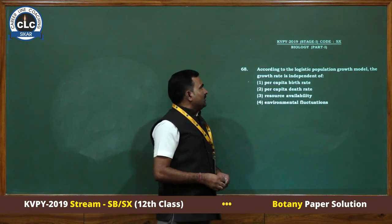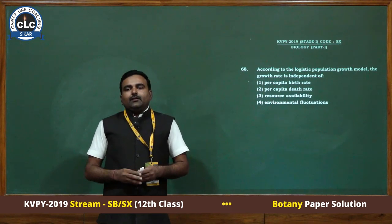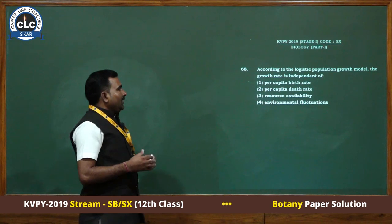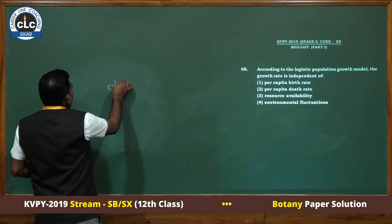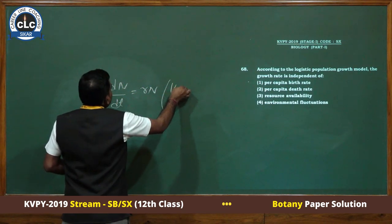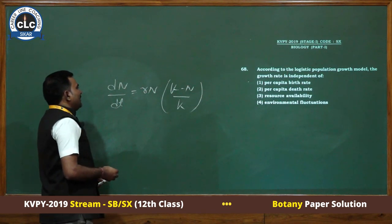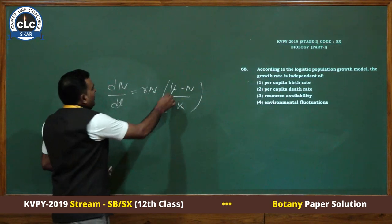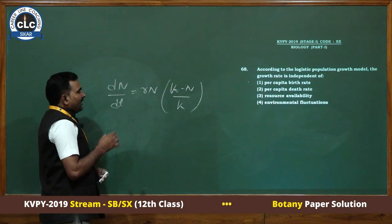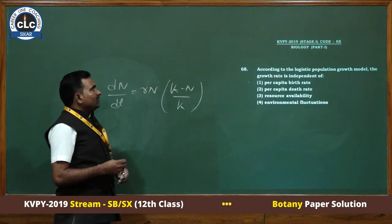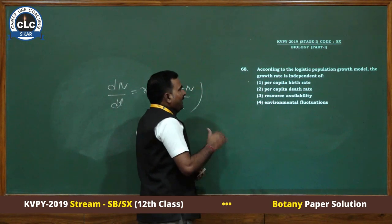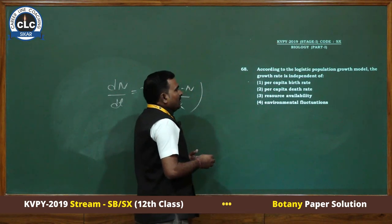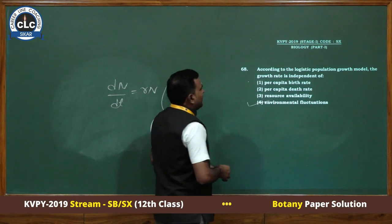According to the logistic population growth model, the growth rate is independent of — the ideal growth model is the logistic growth model, represented by a sigmoid curve. The equation is dN/dt = rN(K−N)/K, where r is the intrinsic rate of natural increase (birth rate minus death rate), N is the population size, and K is carrying capacity, meaning limitation of resources. The logistic population growth model depends on per capita birth rate, per capita death rate, and resource availability, but it does not depend on environmental fluctuation. The answer to question 68 is environmental fluctuation.